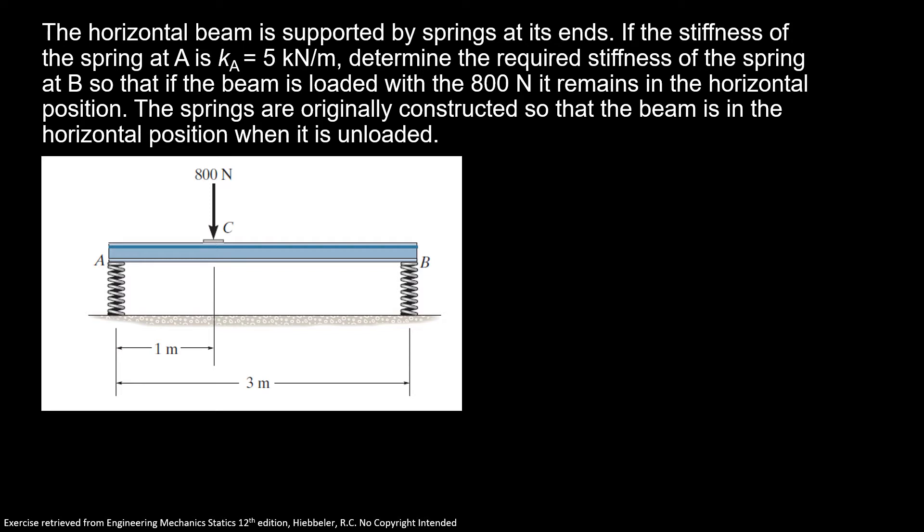The horizontal beam is supported by springs at its ends. If the stiffness of the spring at A is Ka equals 5 kN per meter, determine the required stiffness of the spring at B.